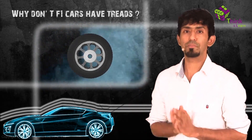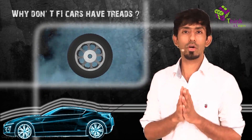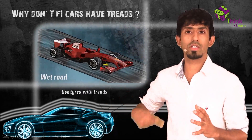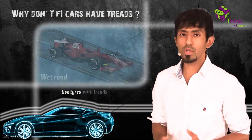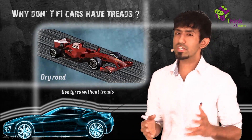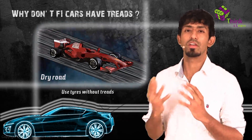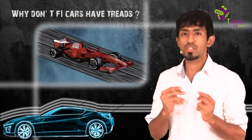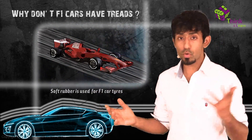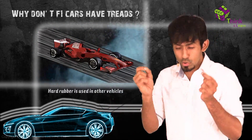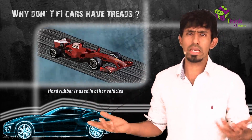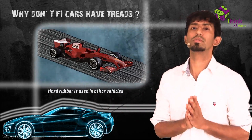This is why, in F1, if it's raining they won't use slick tires — those tires will start slipping. But on a dry road, more contact area is better. F1 cars also use a very different rubber: a soft rubber. Normal bikes use hard rubber with grooves to throw out water, since they can't know when it's going to rain. F1 tires use what's called a soft rubber.